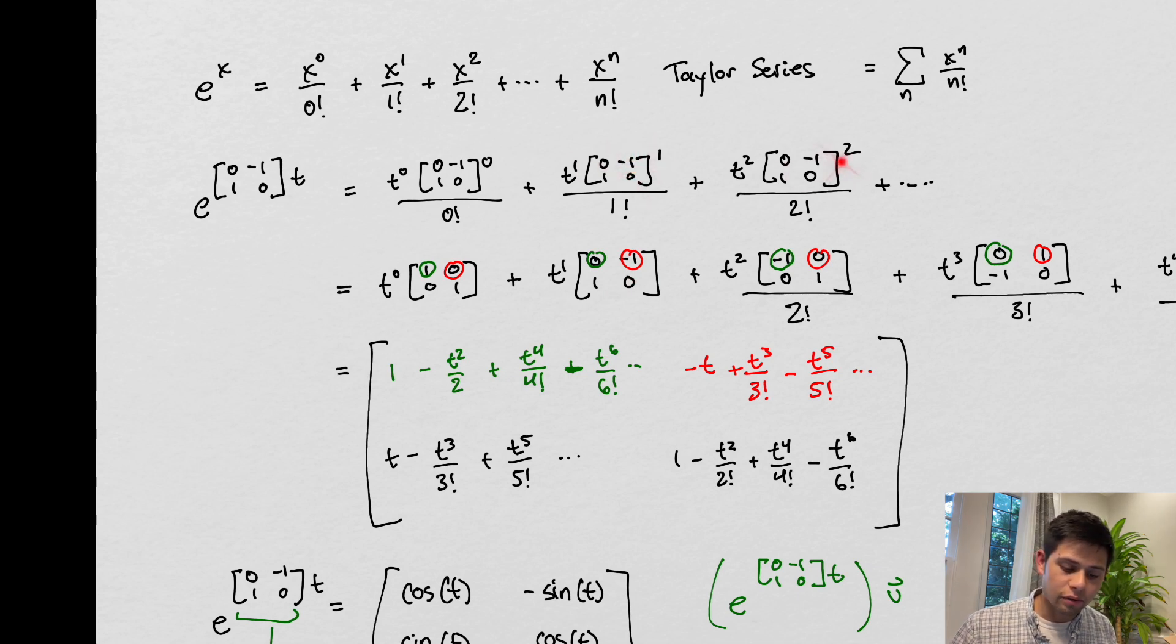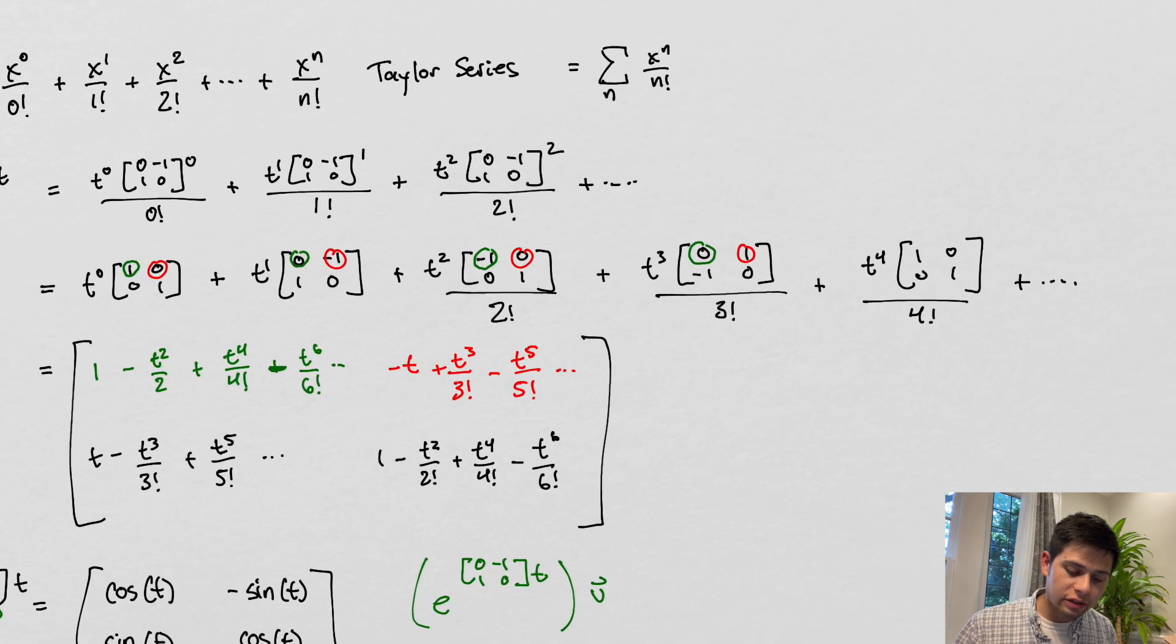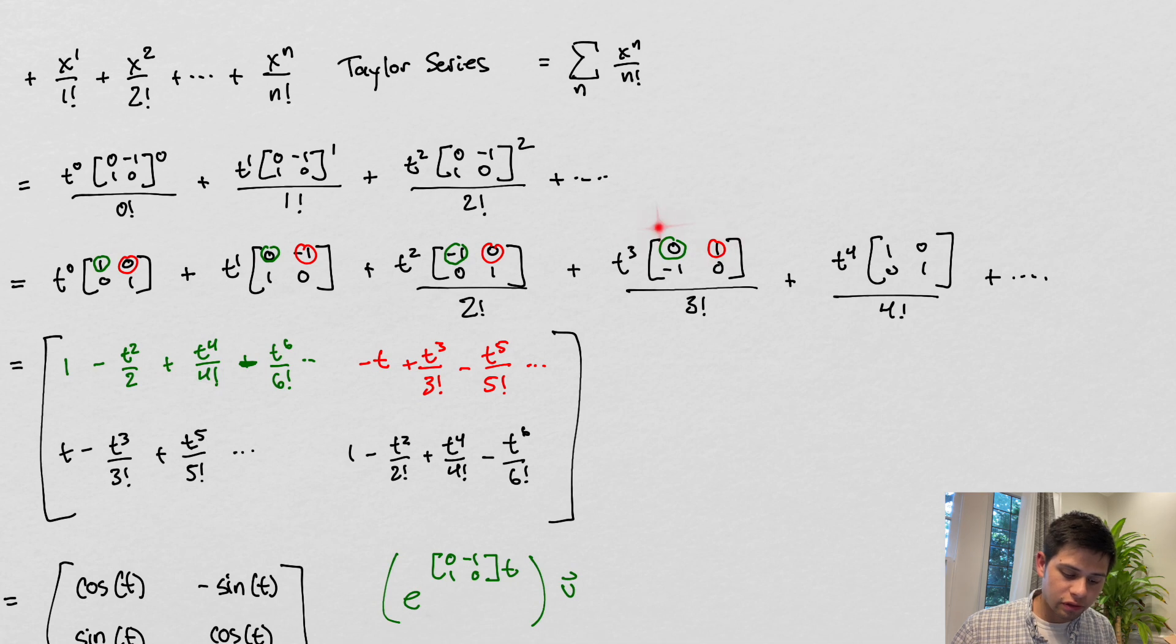And then to the second power we get this matrix. This is just matrix multiplication, so it'd be this times itself. And we can continue doing this. This matrix here is this matrix to the third power, this matrix here is this matrix to the fourth power, and so on.